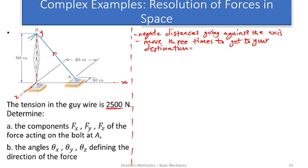Let's remember these two rules: one, we negate distances going against the axes; and two, we move three times to get to our destination. When moving from A to B, we don't move straight along the wire — we obey the axes. First, move a distance from A to the x-axis, which is 30 millimeters, and this is parallel to the z-axis, so it is on z.